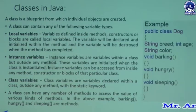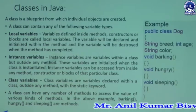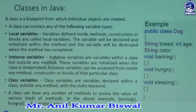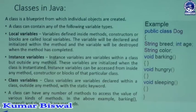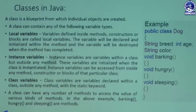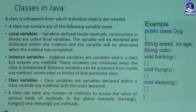First, let us know the meaning of local variables. Local variables are those variables written inside methods, constructors, or blocks. The variable will be declared and initialized within the method, and the variable will be destroyed when the method has completed its task.